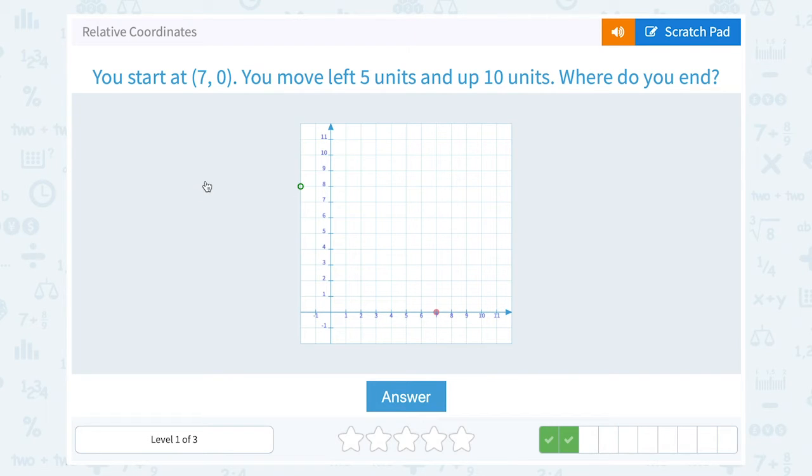You start at 7, 0. You move left 5 units and up 10 units. So starting here at 7, 0. Left 5.